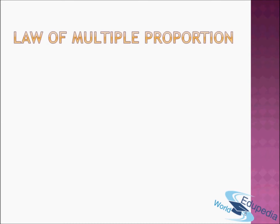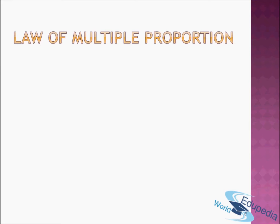Now let's move on to the law of multiple proportion. Please pay attention — it's a little bit more difficult. The law of multiple proportion is used for elements which can combine to form two or more different compounds. For example, hydrogen and oxygen combine to form water, H₂O. What you might not know is that they can also combine to form hydrogen peroxide, H₂O₂. When two elements can combine to form two or more compounds, they follow the law of multiple proportion.